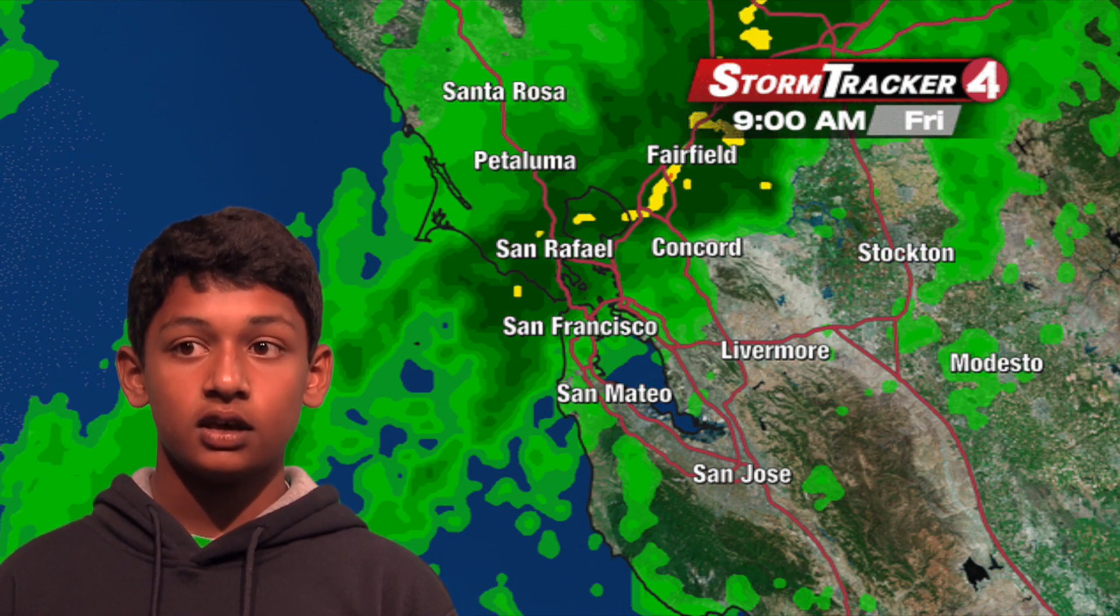Hi, I'm Rishi with your weather report. Today will be mostly sunny with a high of 70 degrees, a low of 52 degrees, and a 0% chance of rain. Tomorrow will be partly cloudy with a high of 73 degrees, a low of 53 degrees, and a 10% chance of rain. Sunday will be mostly sunny with a high of 67 degrees, a low of 48 degrees, and a 10% chance of rain. That's it for weather.